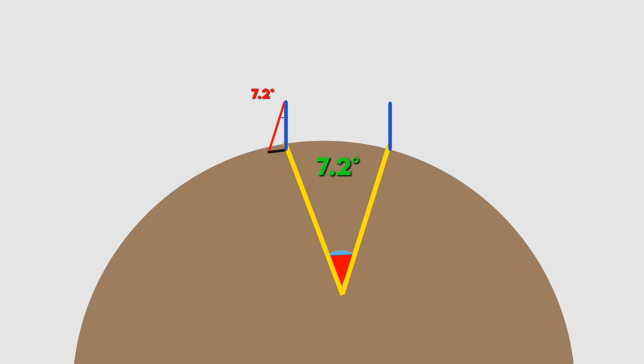According to the rule of alternate interior angles, when two parallel lines are intersected by a transversal, the interior angles are equal.